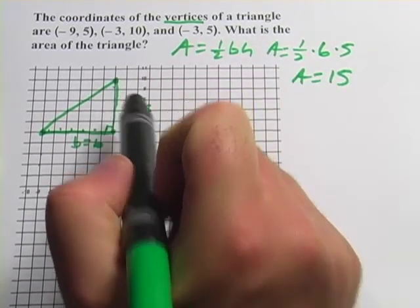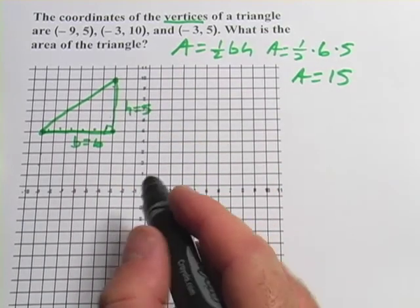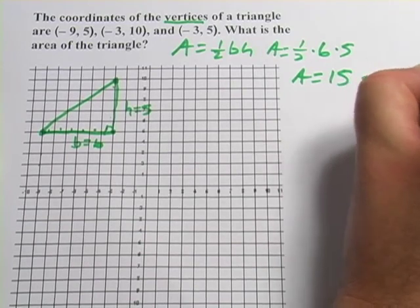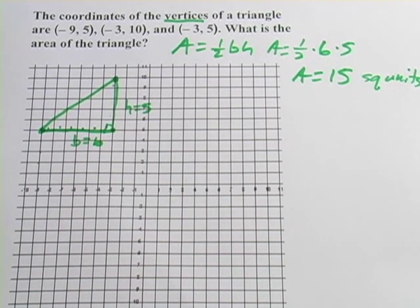And that should be 15. And what did they say the units were? Well, they didn't say. So then this is plotted on a Cartesian coordinate system. So we would say 15 square units. So those are a couple of problems with area of a triangle.